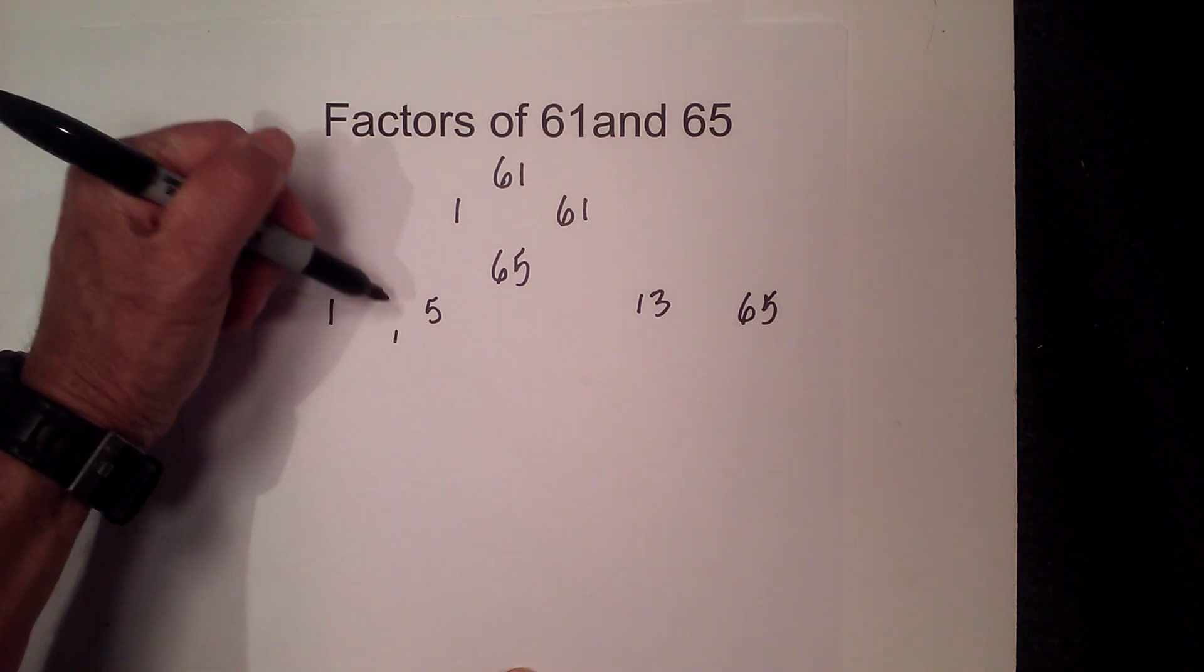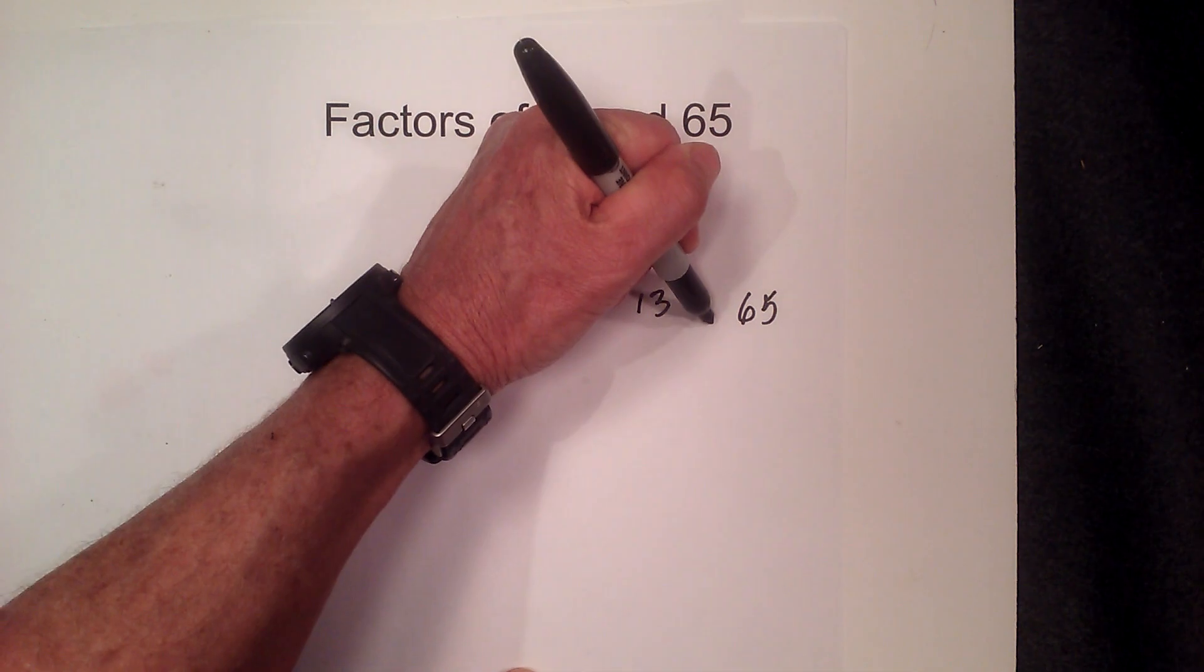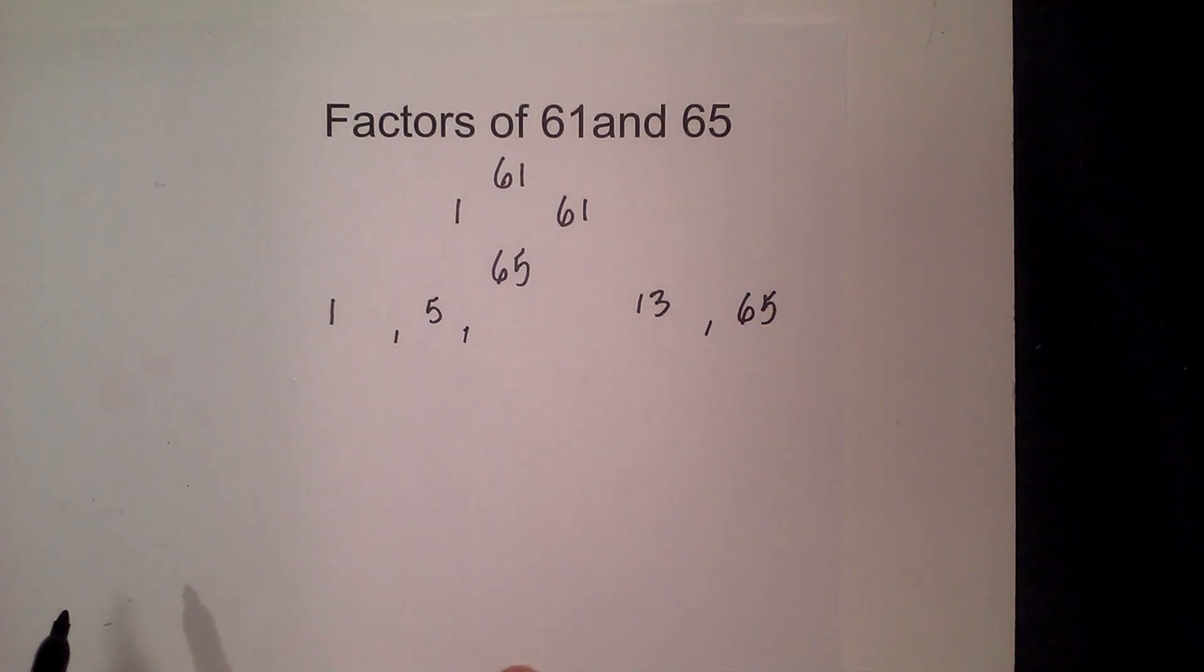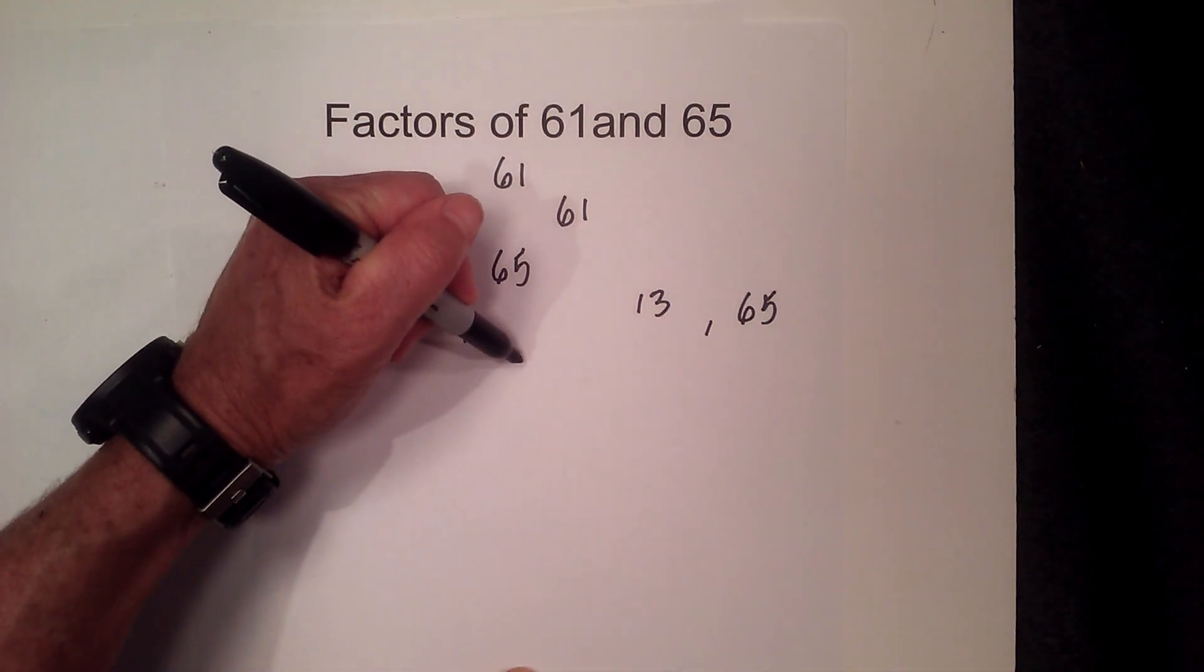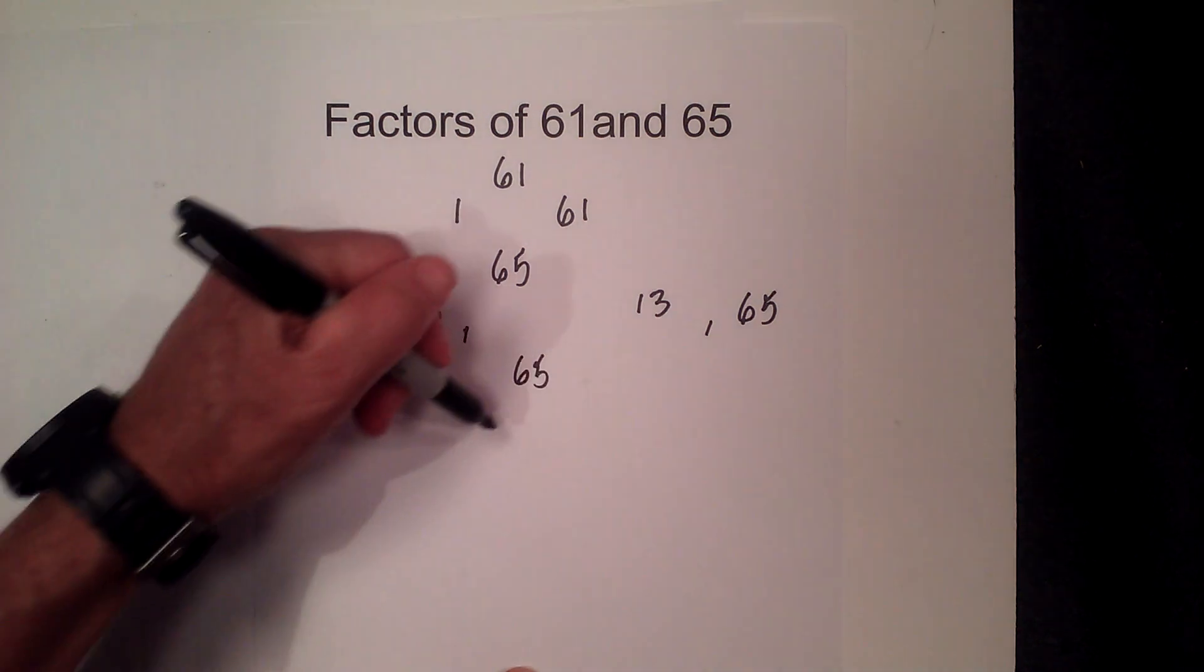So the factors are 1, 5, 13, and 65. If you want to complete a factor tree for the prime numbers,